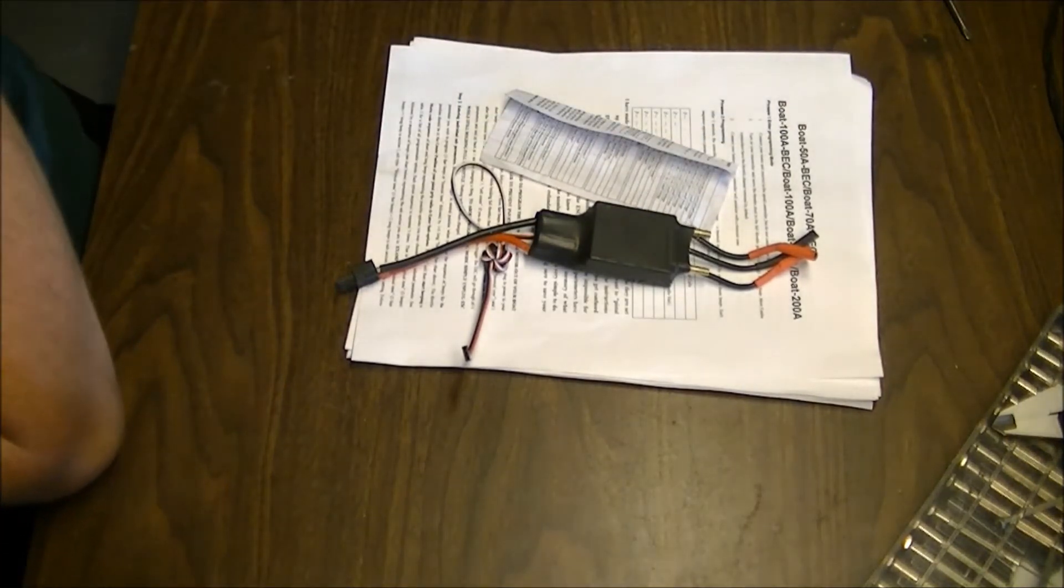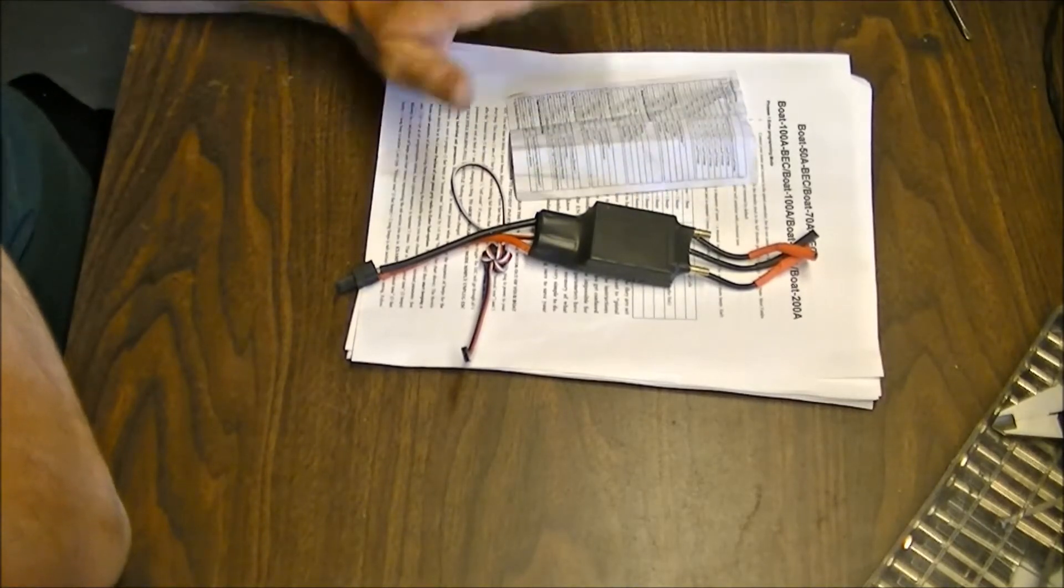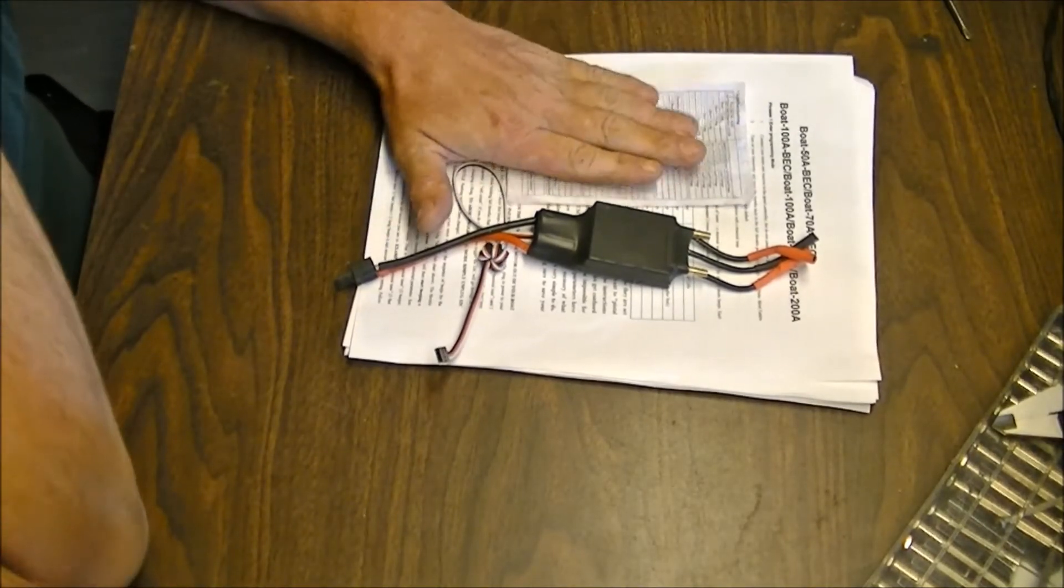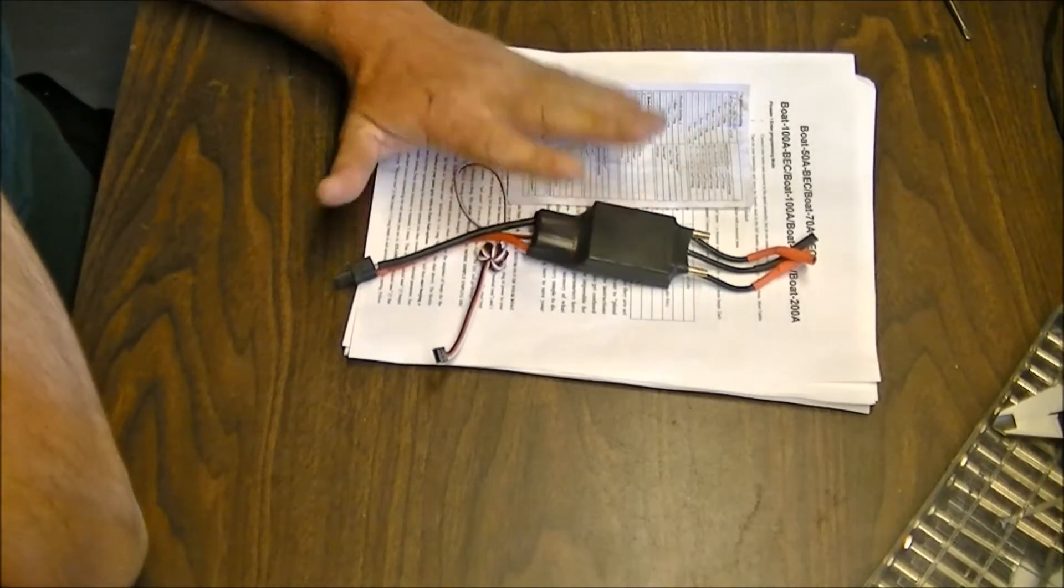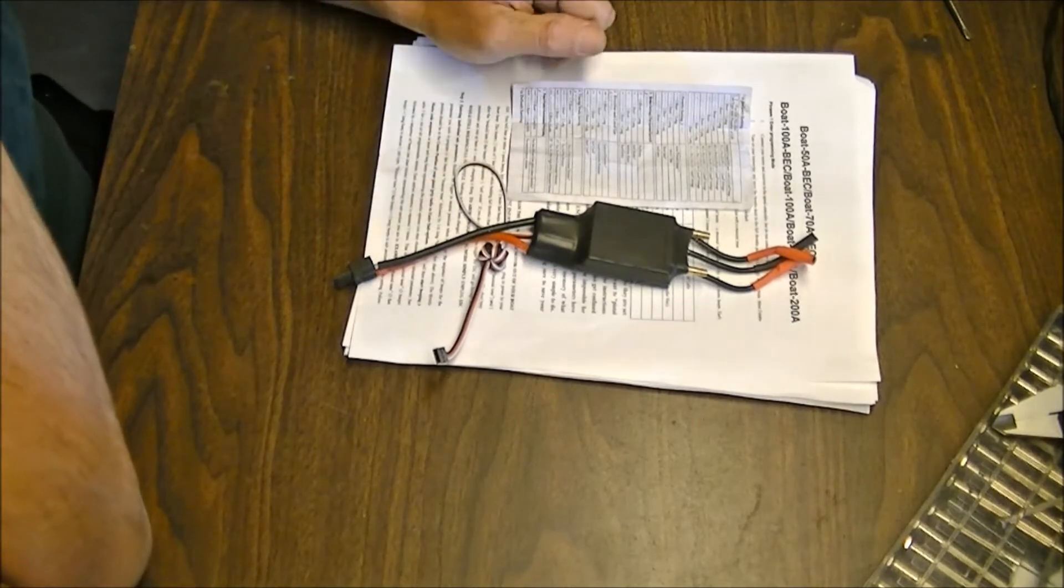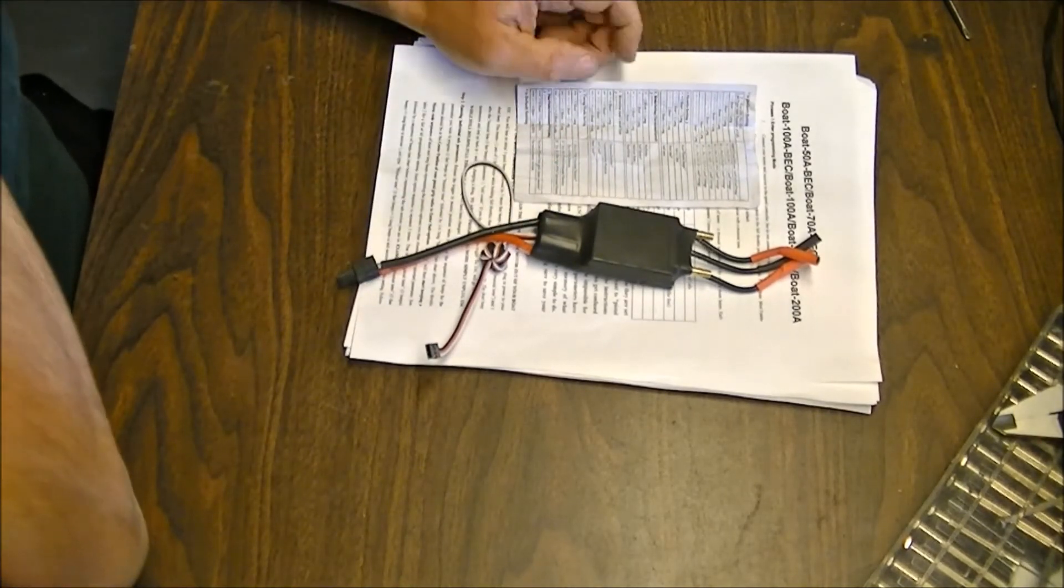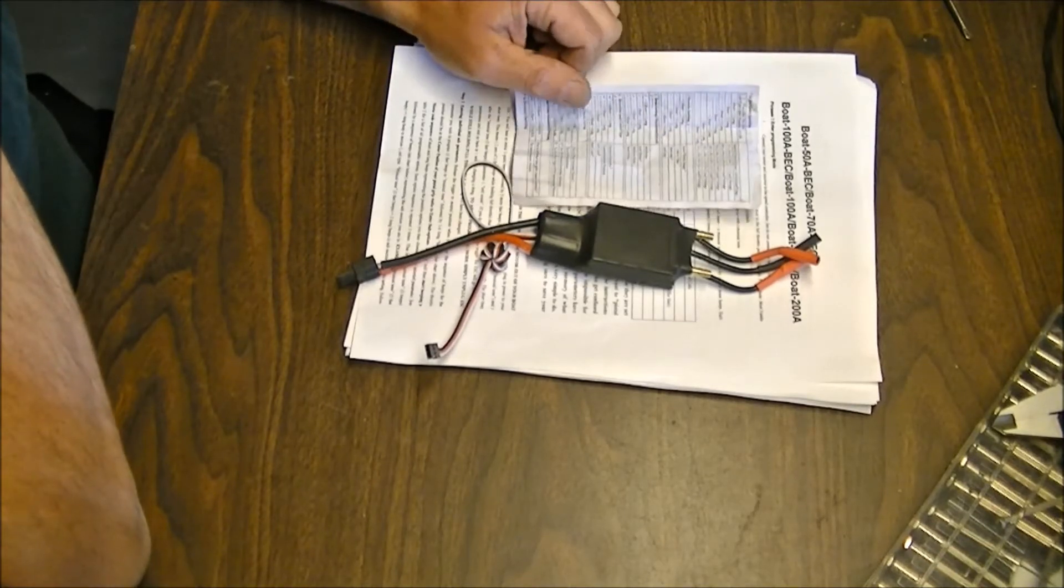Never hurts to have a spare just in case. They do come with instructions. 35 bucks Canadian, free shipping, awesome price, great little ESC. I'm running this in my HK Genesis, which is a 41-inch catamaran for those of you who don't know.